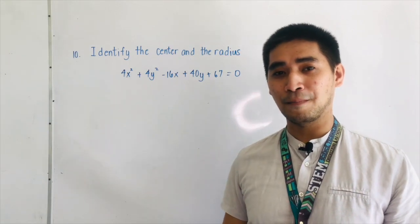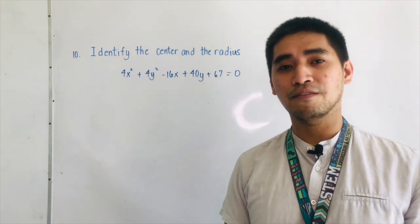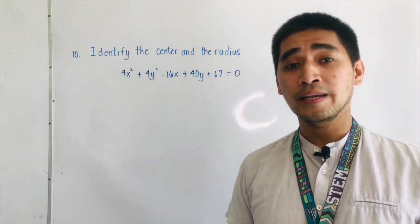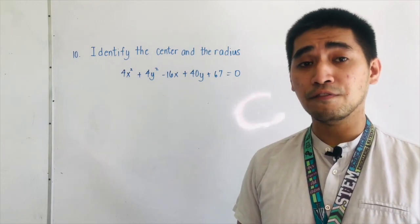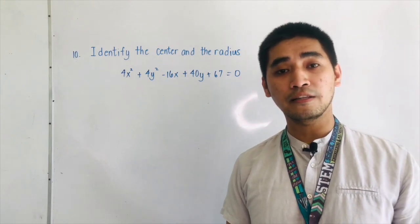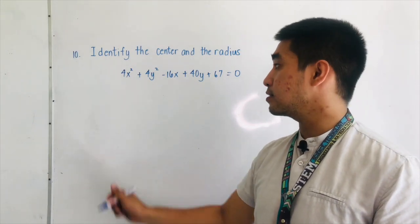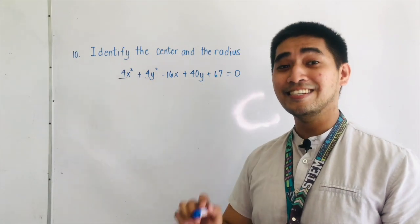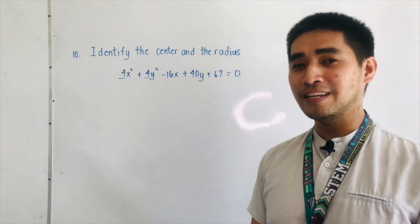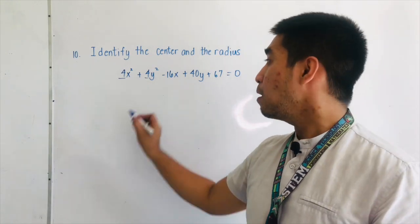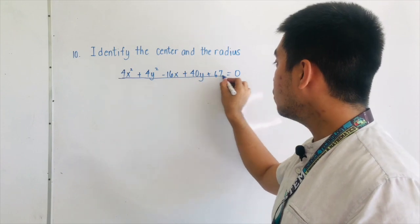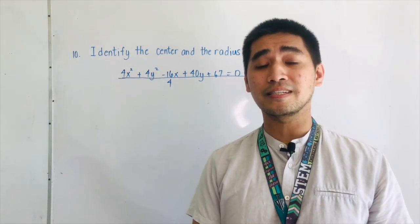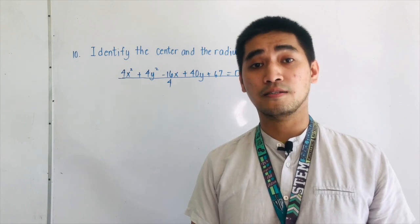The equation is: 4x squared plus 4y squared minus 16x plus 40y plus 67 is equal to 0. We are given the coefficients of x squared, y squared, x, and y. All we have to do first is check if the coefficients of x squared and y squared are the same. Is 4 equal to 4? It is the same. Therefore, we need to divide both sides by 4.